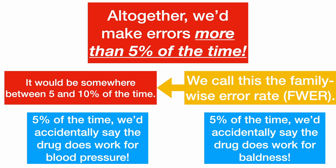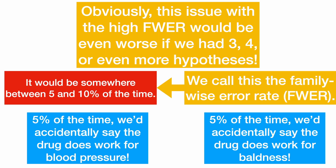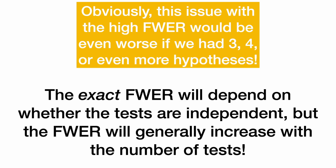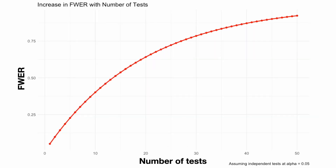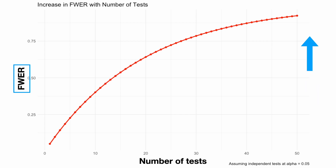We call this the family-wise error rate. In our whole family of hypotheses, how often do we make an error? We make errors more than the 5% of the time we do for each individual hypothesis. This issue with the high family-wise error rate would be even worse if we had 3, 4, or even more hypotheses. The exact family-wise error rate depends on whether the tests are independent, but it will generally increase with the number of tests.